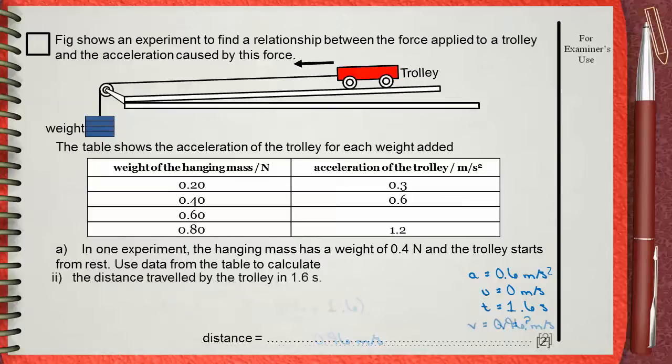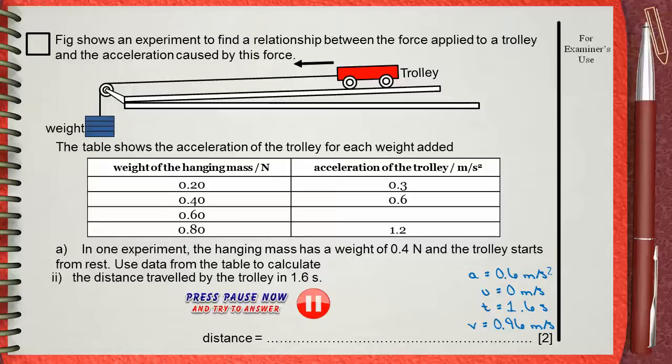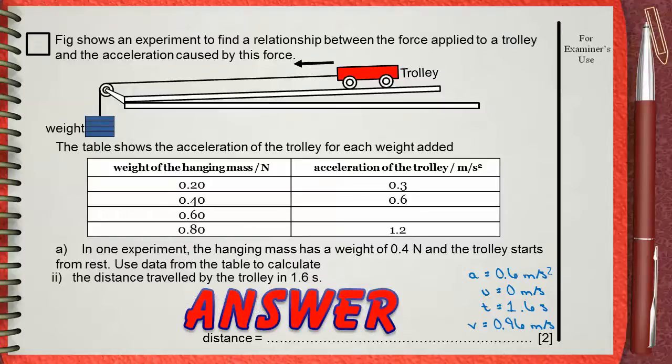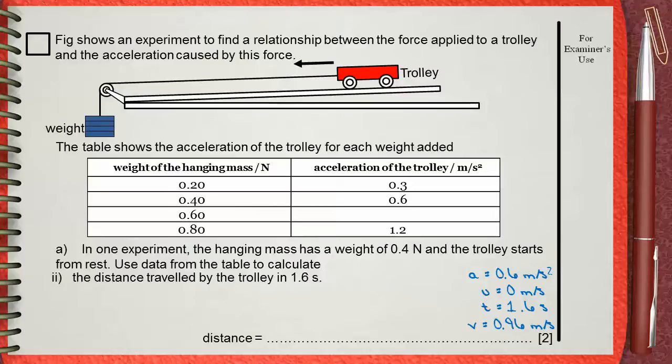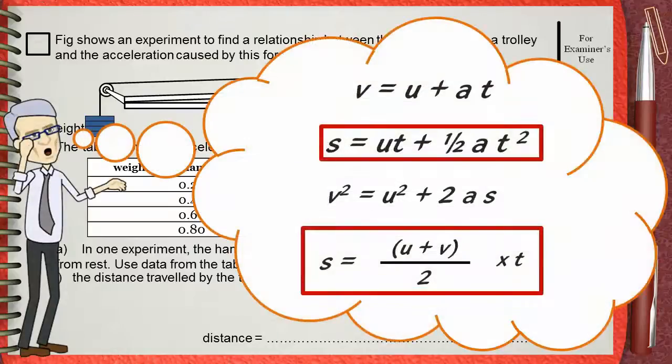Question double i: The distance traveled by the trolley in 1.6 seconds. Now he wants the distance. We have two equations available to find the distance. You can use any one of them. They will both work.